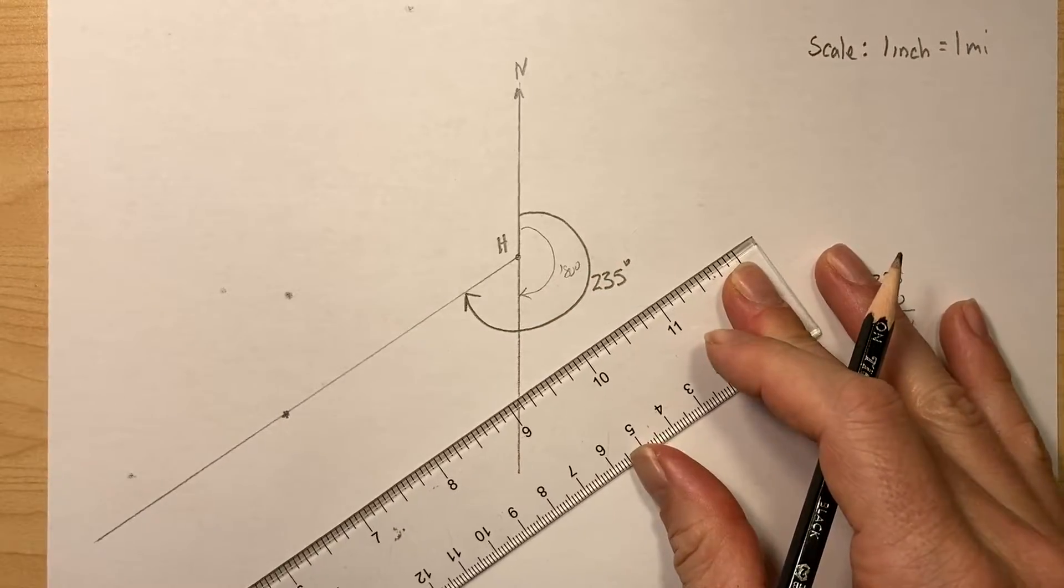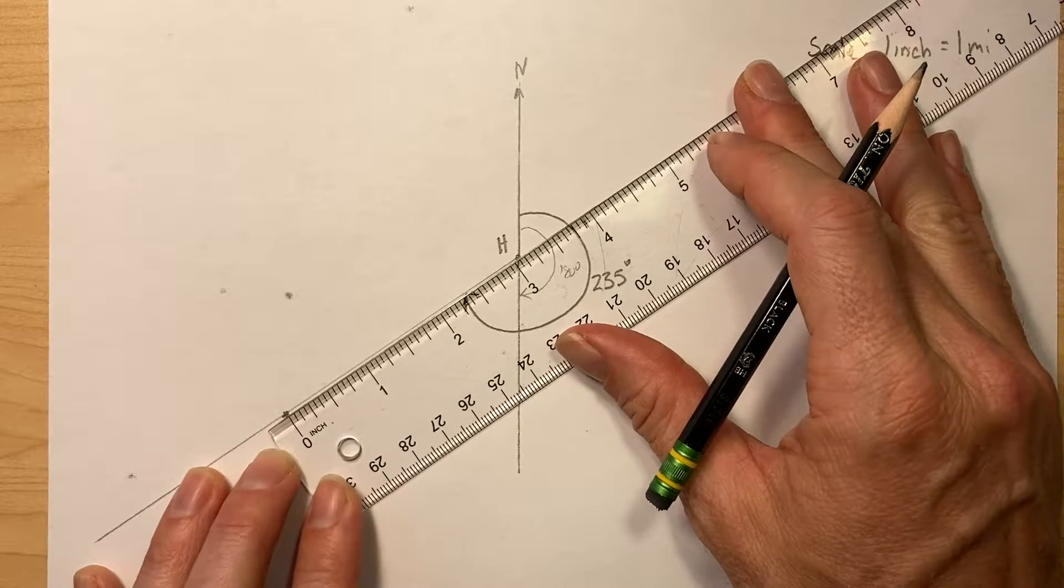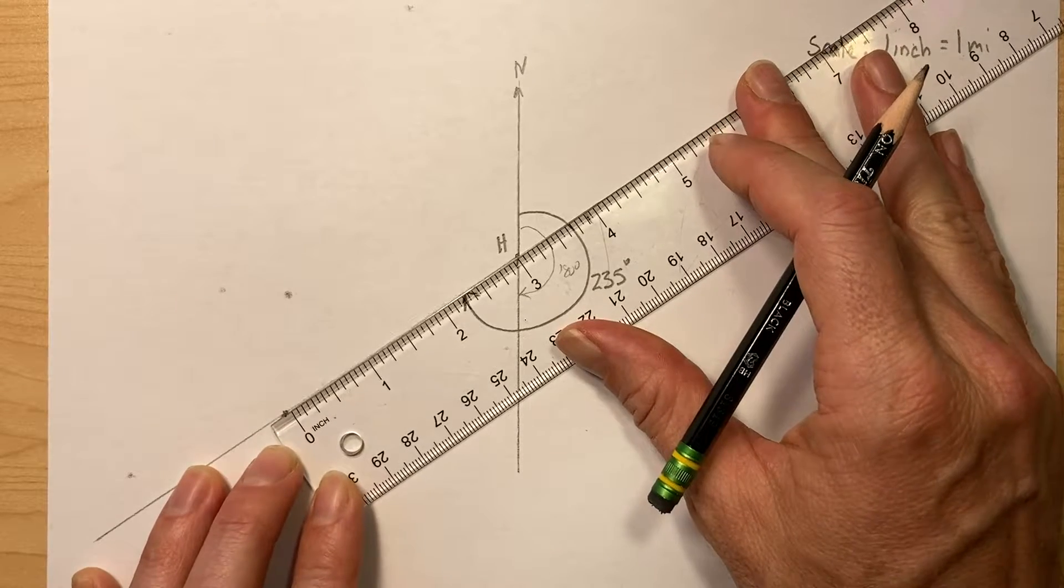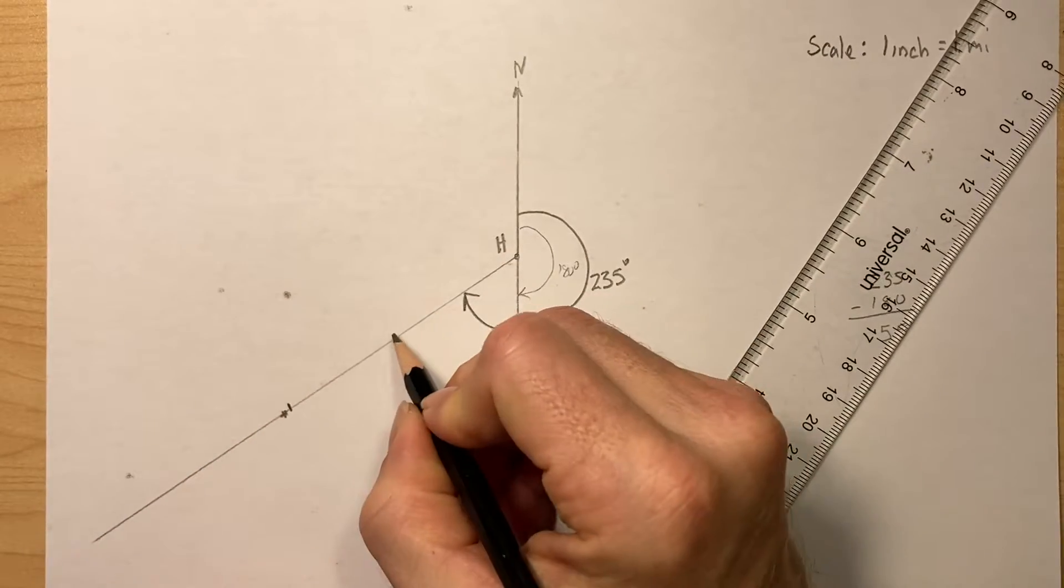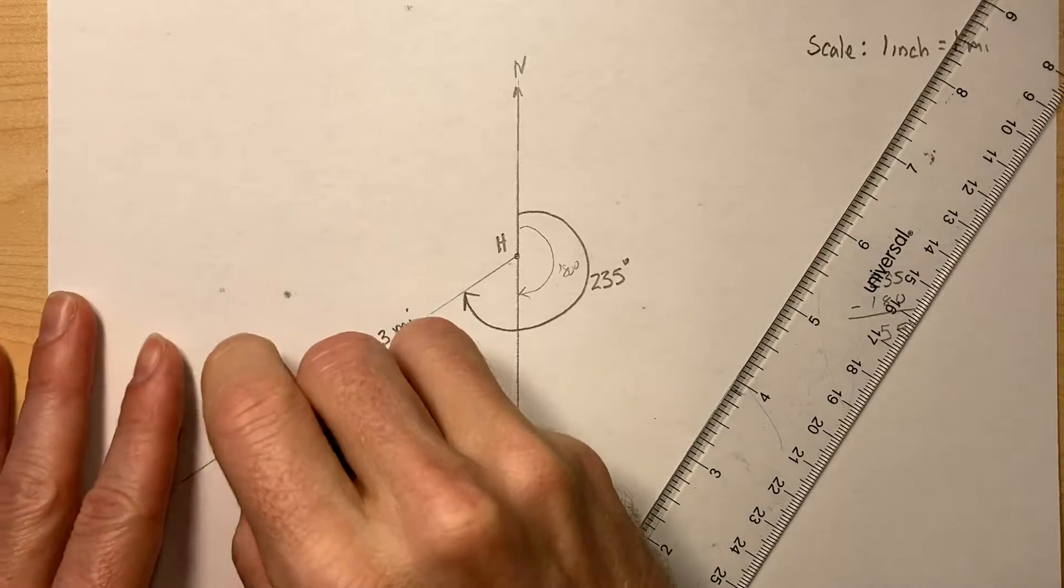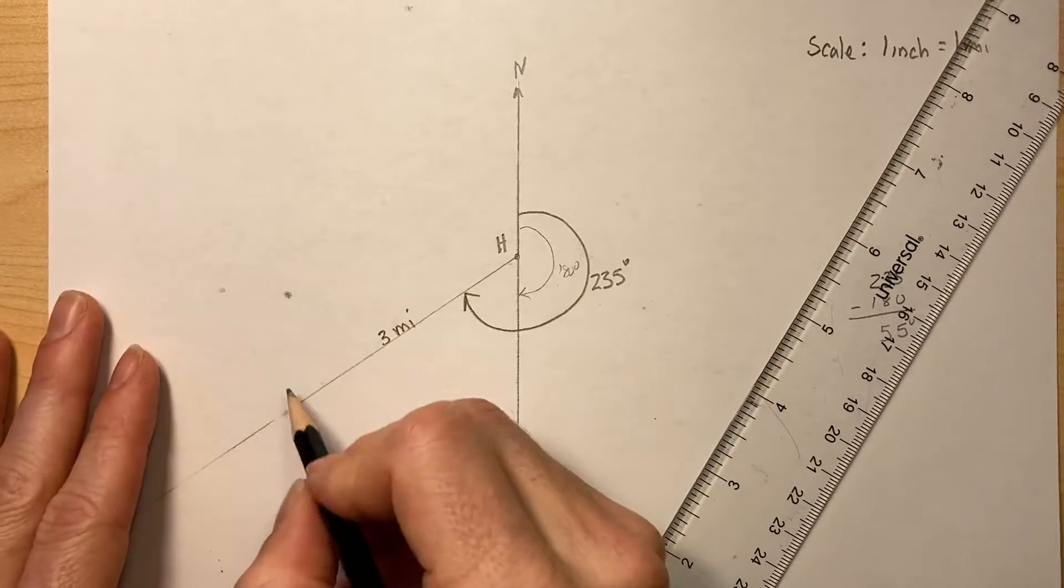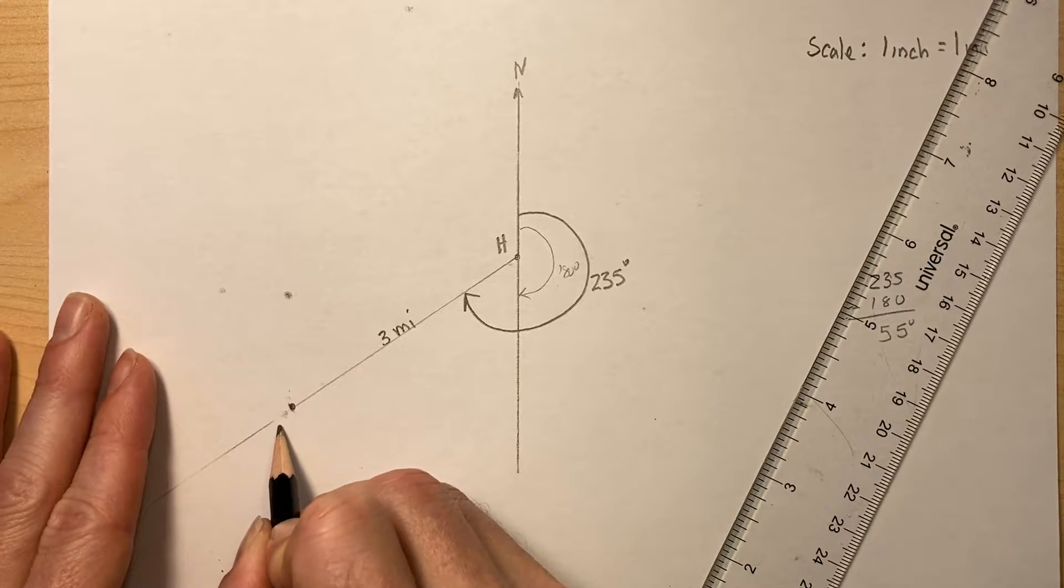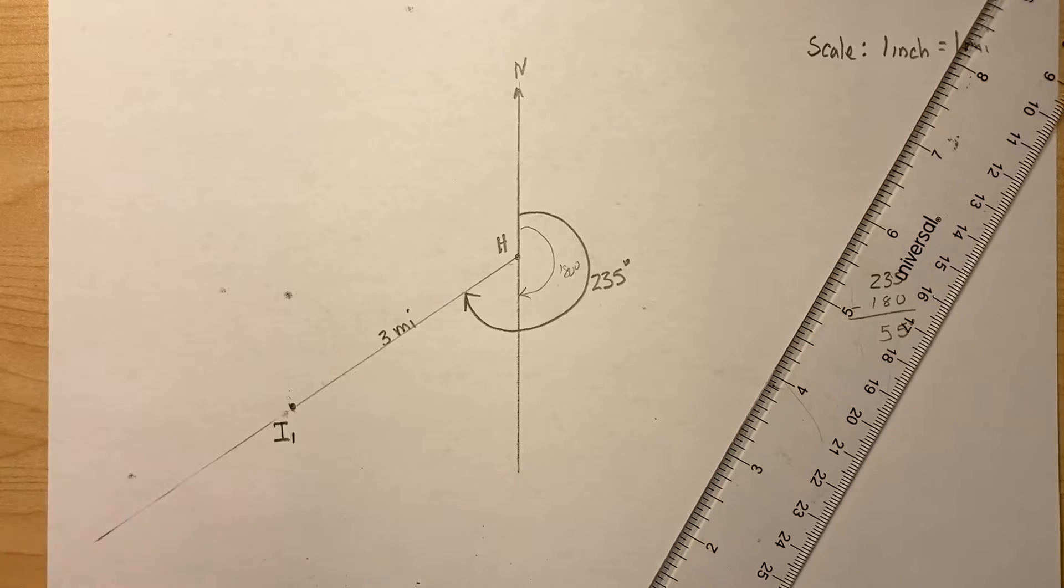So it's measured... this is three right there. So this is three miles, and this is the ship over here. So this is the Independence. I'm going to say I1 for Independence first point.